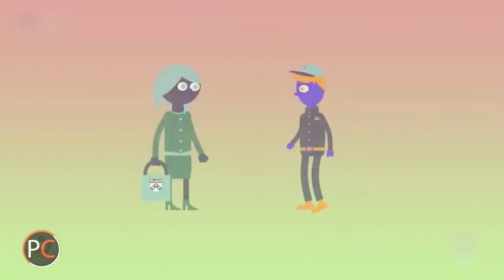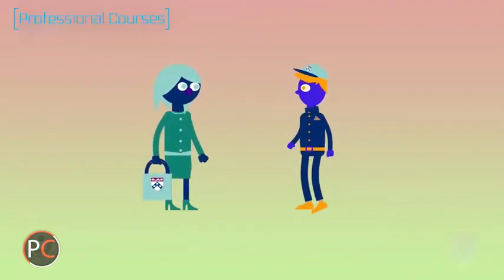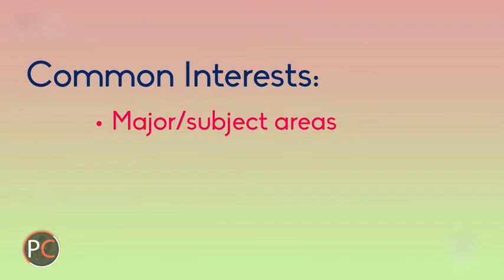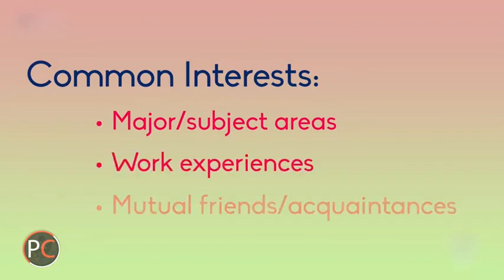two co-workers meet while working for a large financial company in New York. They quickly learn that they both went to the same university. This common background is the beginning of their professional relationship and may help them learn about some other things that they have in common, such as major or subject areas, work experiences or other people they both know. These are called mutual friends or acquaintances. When you meet new people and discover common interests, they become a part of your professional network.